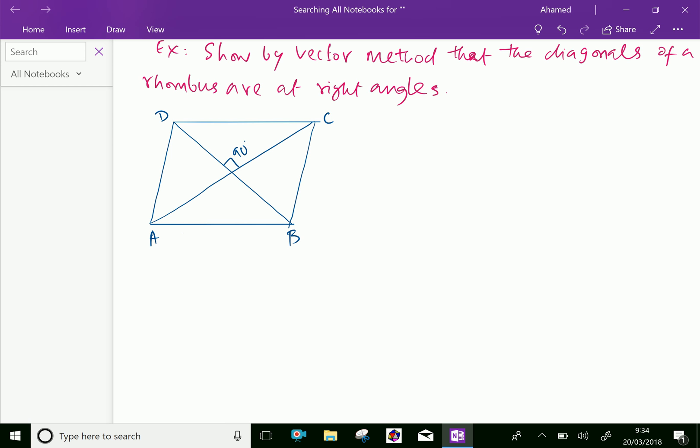Now, let vector B and vector D be the position vectors of points B and D. Position vector of point B is vector B and position vector of point D is vector D, referred to A as origin.